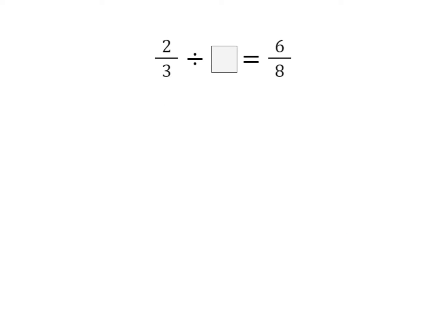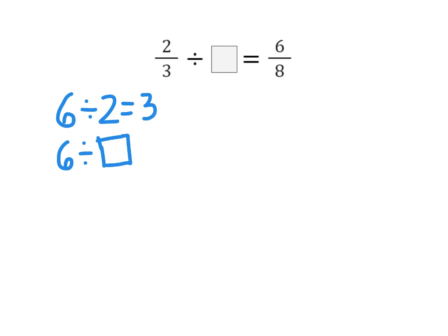Here's a problem with a missing divisor. Let's go back to that problem we were looking at before: 6 divided by 2 is equal to 3. If I wanted to find that missing divisor, I would do 6 divided by 3 — my dividend divided by my quotient — and that would give me the missing divisor.